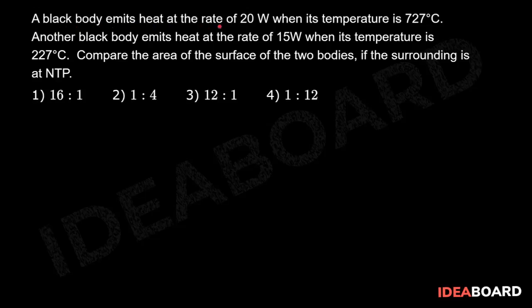A black body emits heat at the rate of 20 watt when its temperature is 727 degrees Celsius. Another black body emits heat at the rate of 15 watt when its temperature is 227 degrees Celsius. Compare the area of the surface of the two bodies if the surrounding is at NTP.